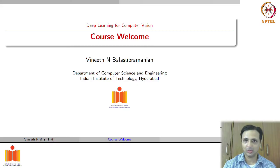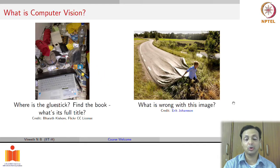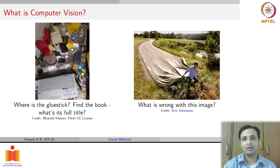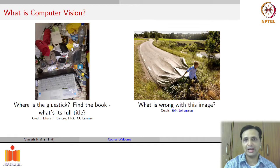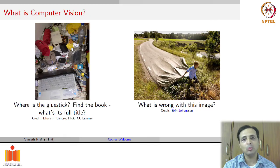Let's start by asking the question: what is this course about? What is deep learning for computer vision, or what is computer vision itself? If you looked at the images on the screen, on the left image one could ask: where is the glue stick, or can you find the book? What is its full title? You will probably find the glue stick and find that the name of the book is Lord of the Rings. If you looked at the image on the right, you could probably say what is wrong with the image — that it violates some natural laws and is perhaps artificially created in some way.